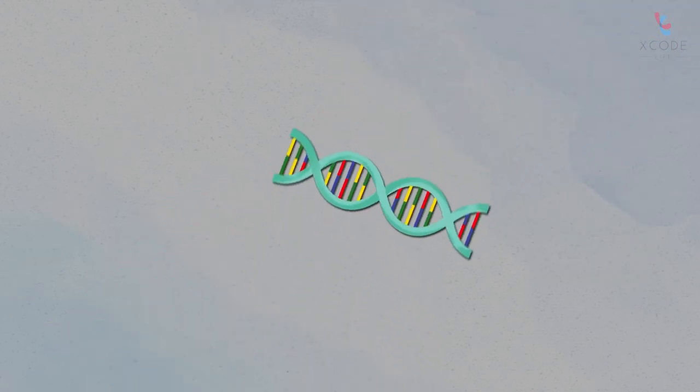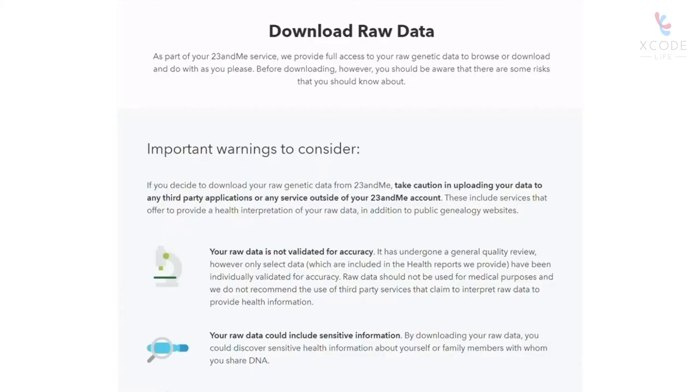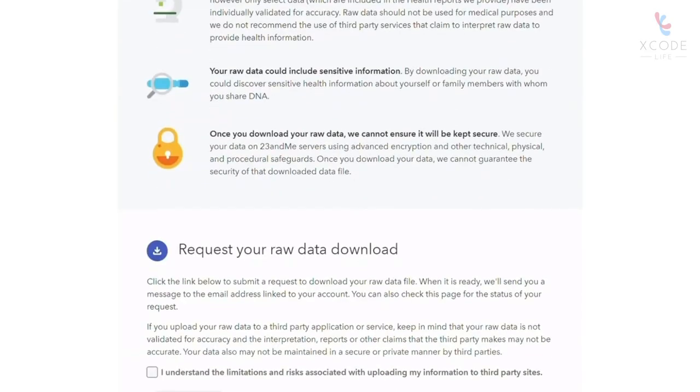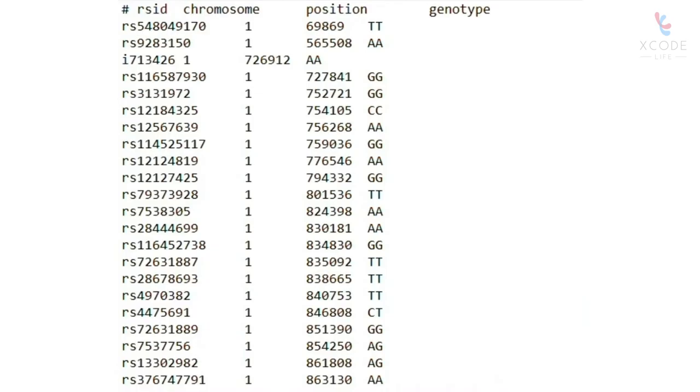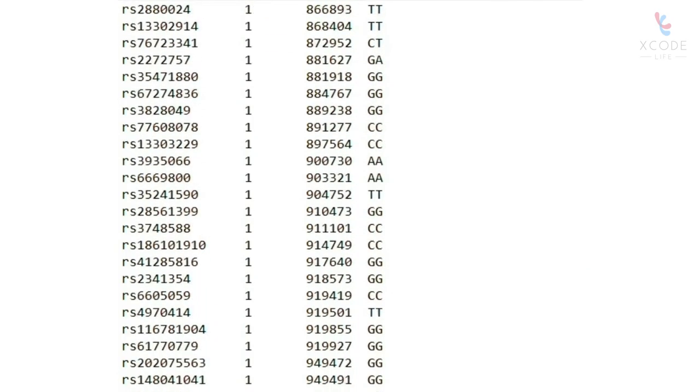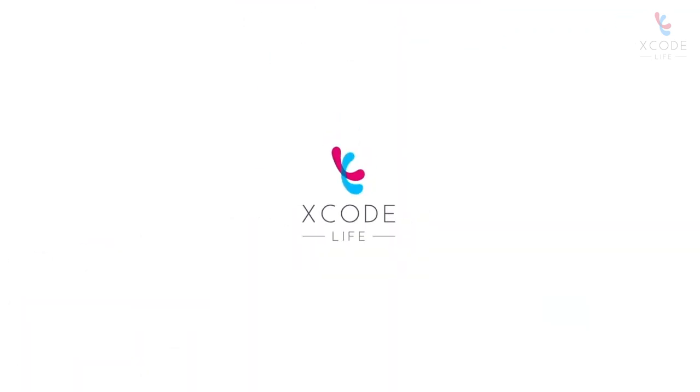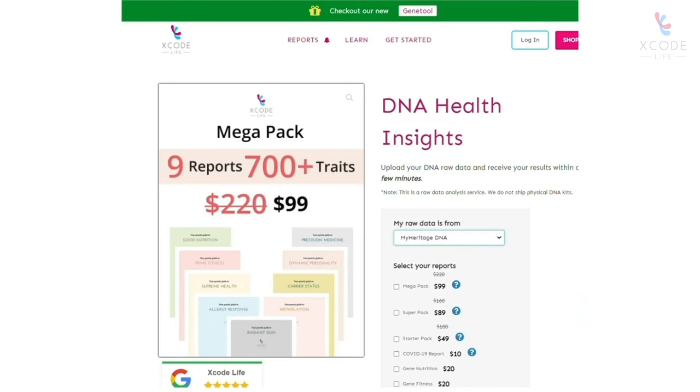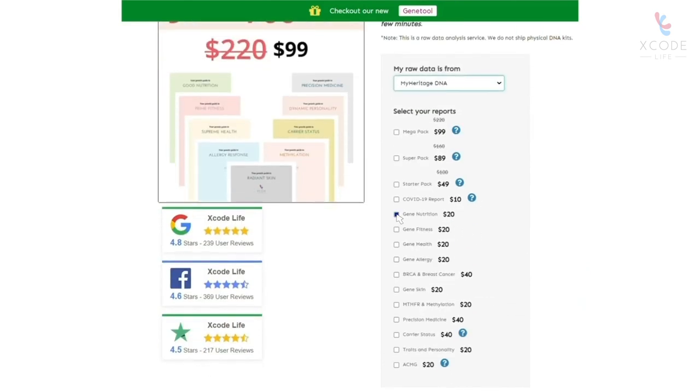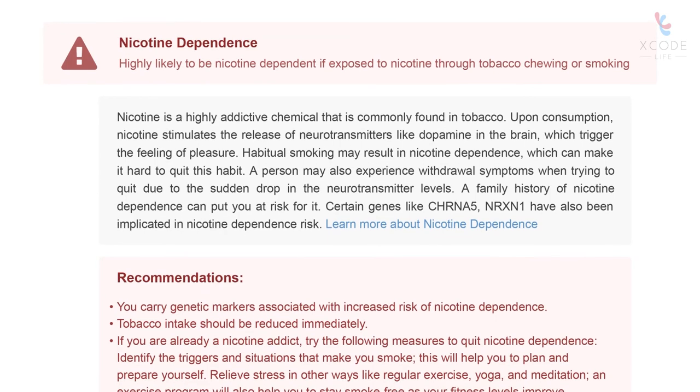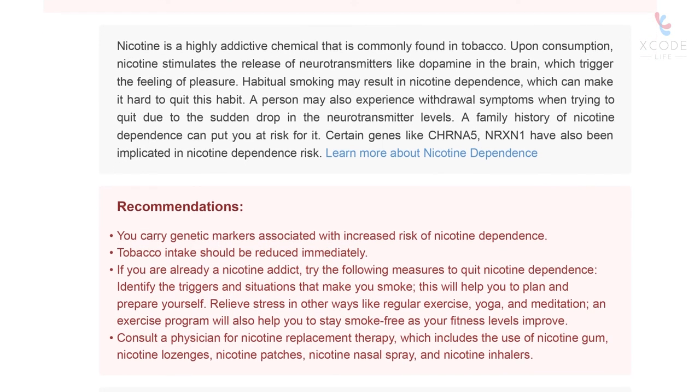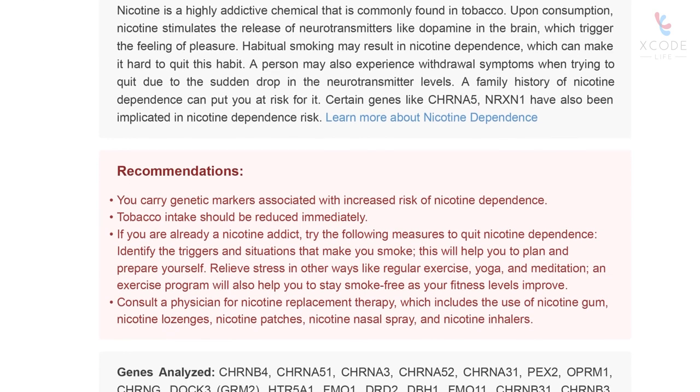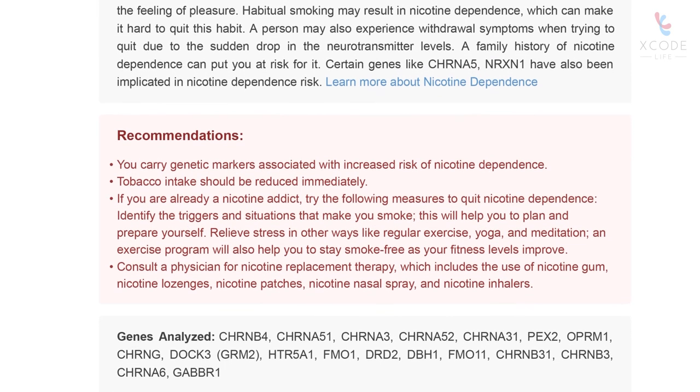You can do this through a simple genetic test. Most genetic tests provide your DNA information in the form of a text file called the raw DNA data. This data may seem like Greek and Latin to you. We at Xcode Life can help you interpret this data. All you have to do is upload your raw data and order a gene nutrition report. Xcode Life then analyzes your raw data in detail to provide you with comprehensive nutrition analysis, including information on nicotine dependence genes.